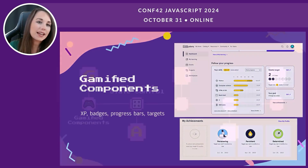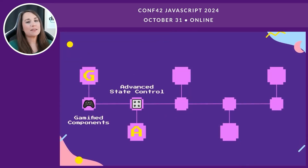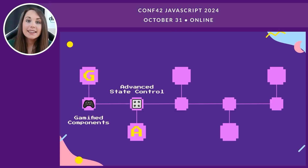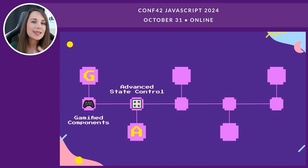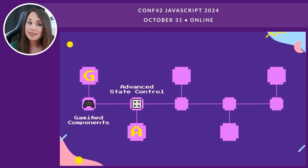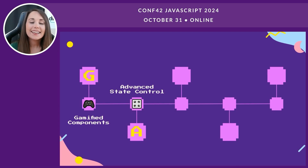Next, the A in GAMES stands for advanced state management. As apps grow in complexity, keeping track of state across multiple components can get tricky. This is where React's Context API shines — it allows us to manage state globally and ensures consistency throughout the application. By using centralized state management, we can handle things like user progress, settings, and theme changes in a scalable and maintainable way.